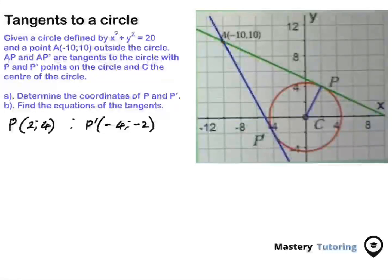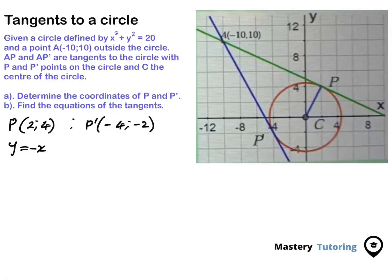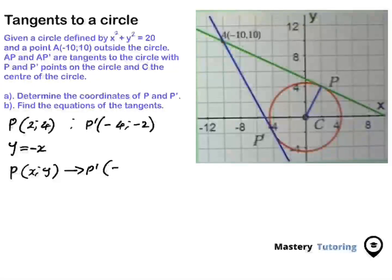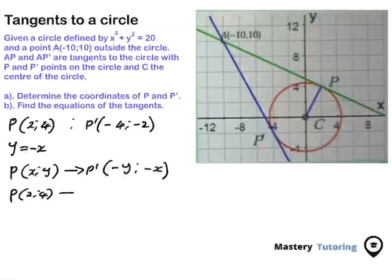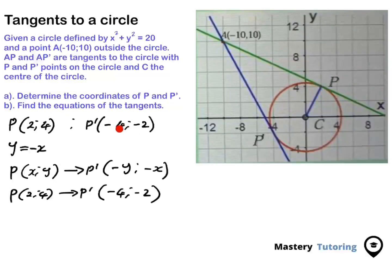For the second method, we know that point P' is the reflection of point P about the line y = -x. Because of this reflection, we swap the x and y coordinates and negate them. Since P is (2, 4), P' is going to be (-4, -2). This is the same result we got from reading the diagram.